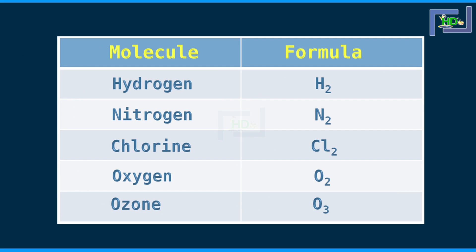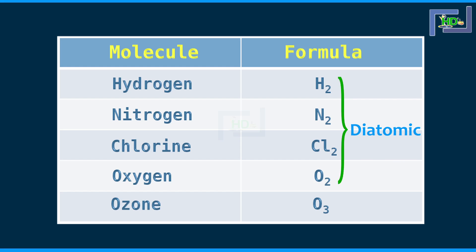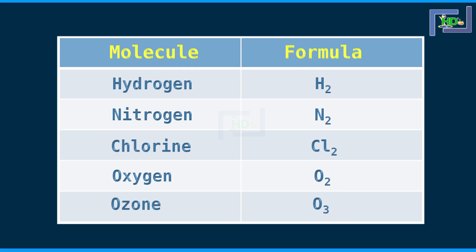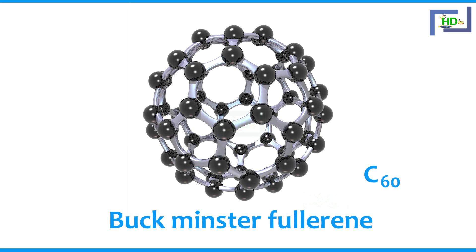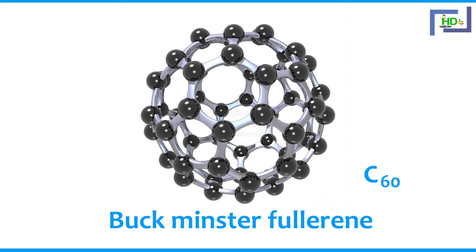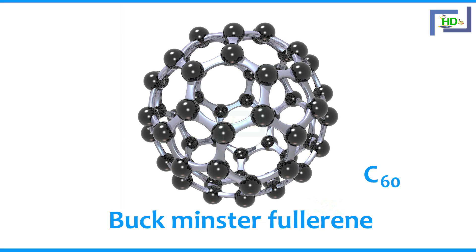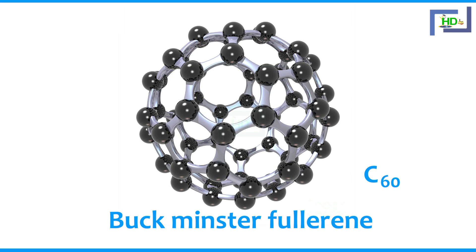Homoatomic molecules can be further classified based on the number of atoms in the molecule. If it contains two atoms, it is called a diatomic molecule — examples are H2, N2, Cl2. If it contains three atoms, it is called a triatomic molecule — for example ozone, O3. Recently, a type of carbon called Buckminster Fullerene has been discovered; it has 60 atoms of carbon in one molecule, C60, and is called a polyatomic molecule. Polyatomic molecules have more than three atoms.